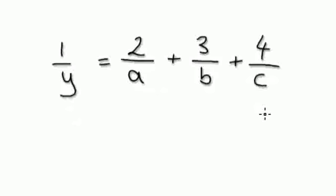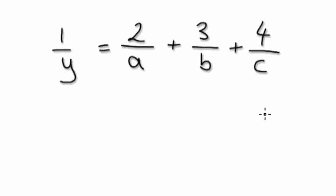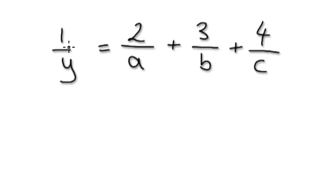Let me give you one quick example, and then you can have a go. Here, make B the subject. How would you do this? So you're given 1 over Y, and so on — make B the subject.